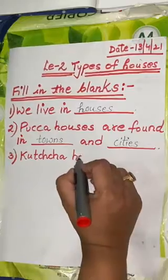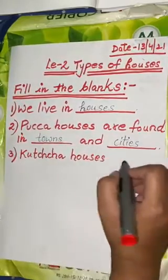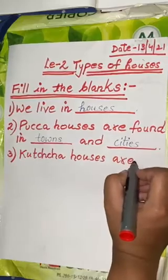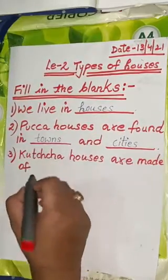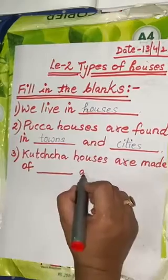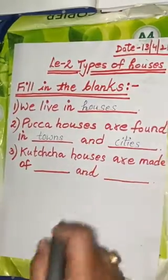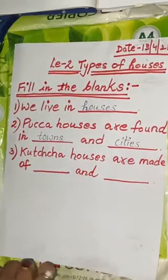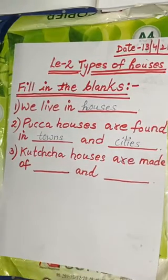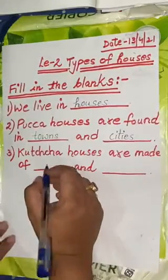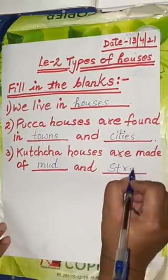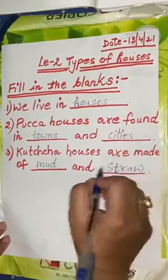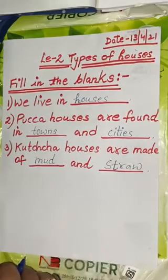Third question: Kaccha houses are made of dash, dash and dash. With the help of which things are Kaccha houses made? Kaccha houses are made up of mud and straw.